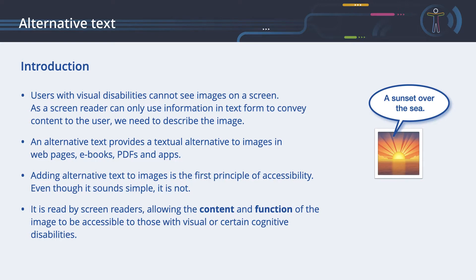Even though it sounds simple, it is not. The web is full of images that have missing, incorrect or poor alternative text. So let's think a moment about how to design a good alternative text. The alternative text is read by screen readers, allowing the content and function of the image to be accessible to those with visual or certain cognitive disabilities.